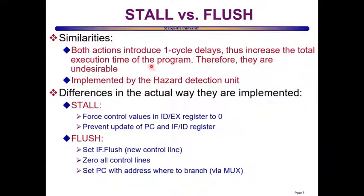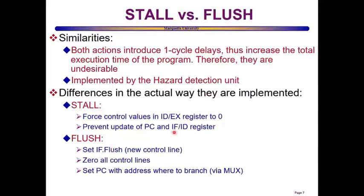Both stalling and flushing the pipeline are implemented by the hazard detection unit. In terms of differences, stalling is achieved by forcing control values in the ID/EX register to zero and by preventing updates to the program counter and the IF/ID register. Flushing introduces a new control line, resets the IF/ID register, zeros all control lines, and sets the program counter with the branch target address through the multiplexer in front of the program counter. And that's pretty much it.